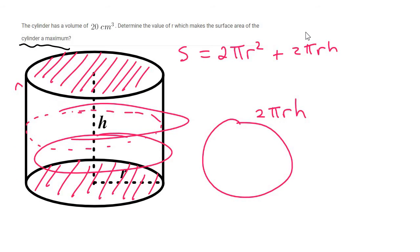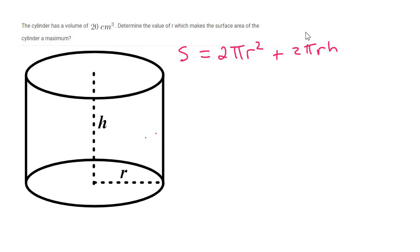That's the surface area of a cylinder. Now the problem with this is you've got R and you've got H, so you've got two variables. Pi is not a variable. Pi is a constant of about 3.14. So we need to replace.